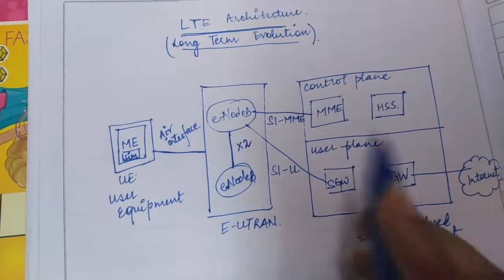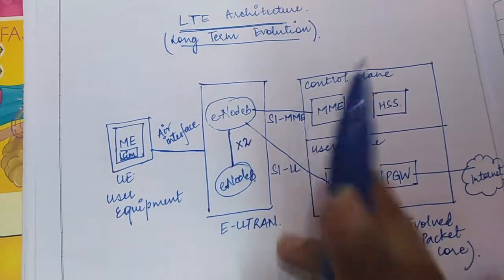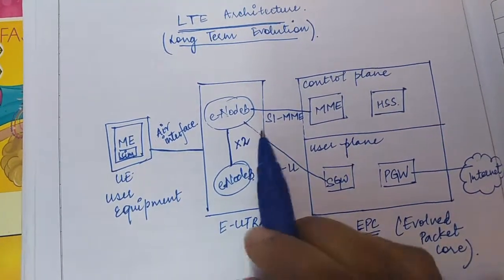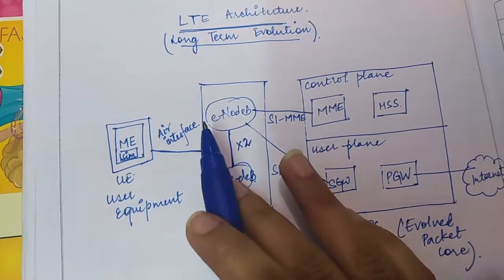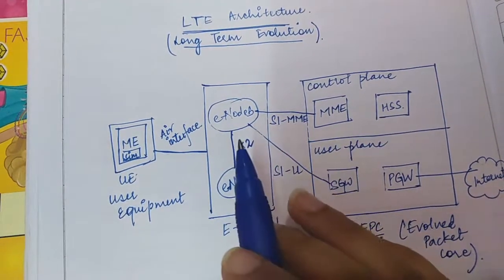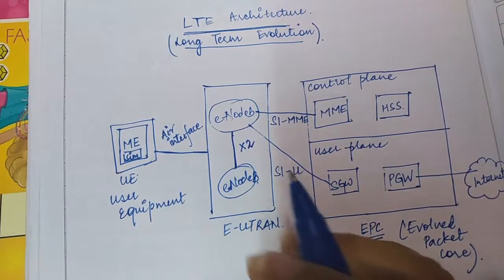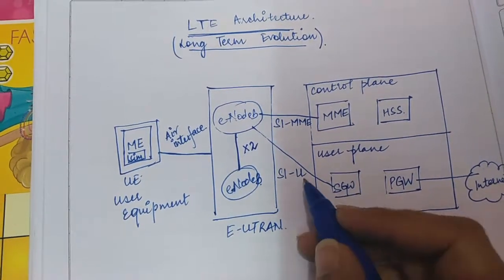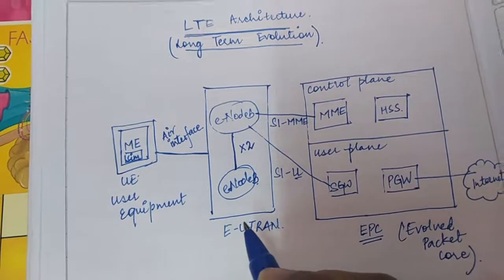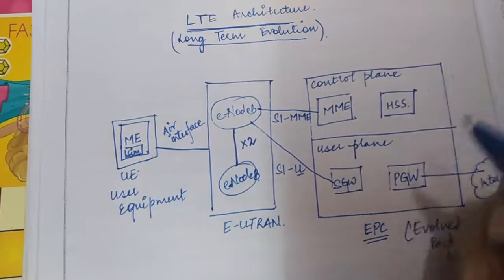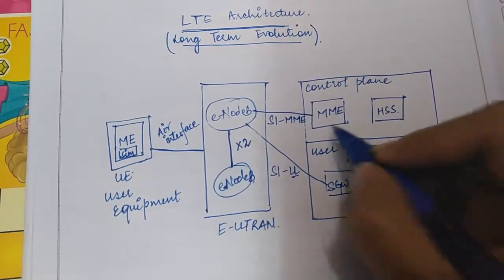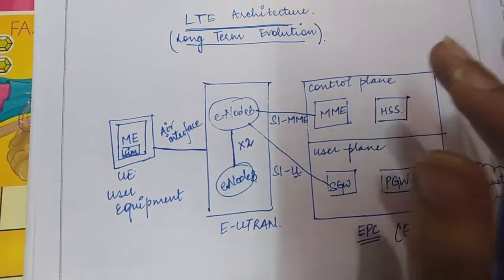In order to communicate between EUTRAN to the EPC architecture we have S1 interface. There are two types of interfaces in S1: S1 MME in order to connect with the MME and S1 U in order to connect with the user plane. So U stands for the user plane. Now MME is the mobility management entity.